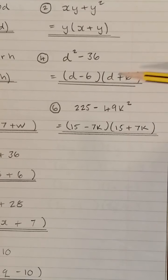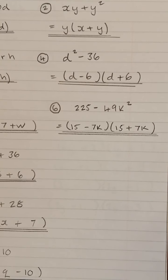How about number 6? 225. Well, that's 15 times 15, hopefully you know that. 49K² is 7K times 7K. One's a take away, one's a plus.